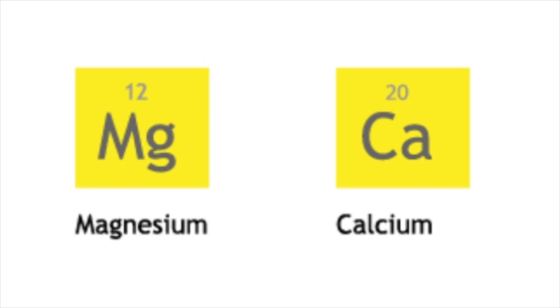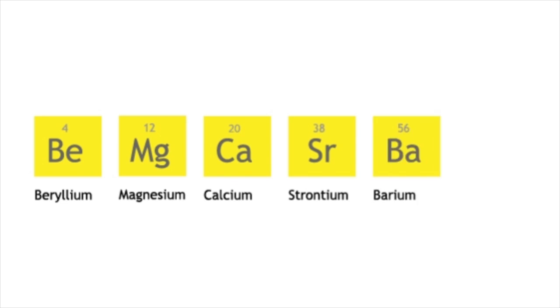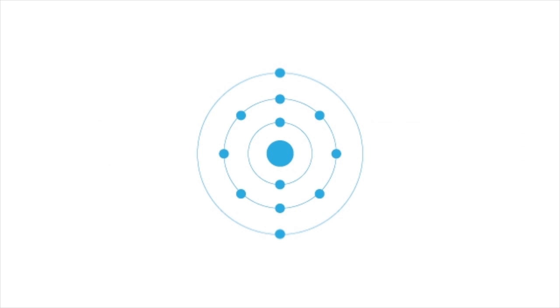The alkaline earth metals are beryllium, magnesium, calcium, strontium, barium, and radium, located in Group 2 of the periodic table.